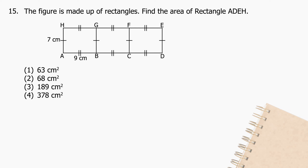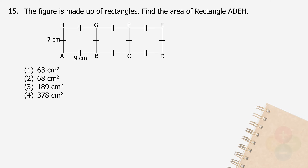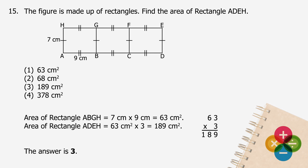Question 15: The figure is made up of rectangles. Find the area of rectangle ADEH. The area of rectangle ABGH will be 7 cm multiplied by 9 cm, and the product is 63 square centimeters. The area of rectangle ADEH will be 63 square centimeters multiplied by 3, and the product is 189 square centimeters. The answer is 3.